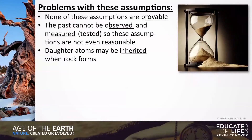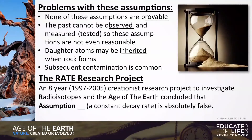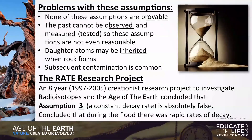Daughter atoms may be inherited when a rock forms and subsequent contamination is common, making it impossible to determine the age of the earth based on radioisotope dating. There was an eight-year creationist research project to investigate radioisotopes and the age of the earth, and it concluded that assumption three — a constant decay rate — is absolutely false. They found that you can change the rate of decay based on the environment in which the isotopes are located.